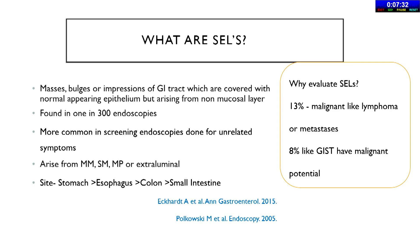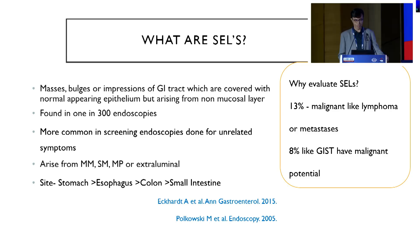We find them 1 in 300 endoscopies — I would say it is even more common, maybe 1 in 100 nowadays. So the question is why evaluate SELs? Because 13% of them can be malignant like lymphoma or metastasis, and 8% like GIST have malignant potential.